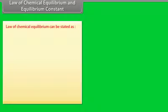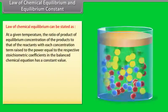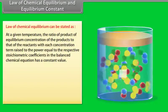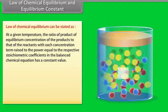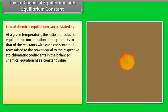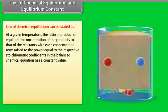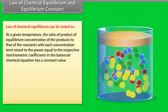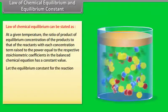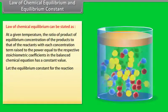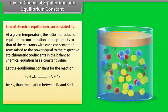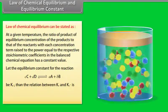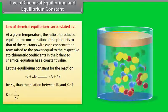The Law of Chemical Equilibrium states: at a given temperature, the ratio of the product of equilibrium concentrations of products to that of reactants, with each concentration term raised to the power equal to the respective stoichiometric coefficients in the balanced equation, has a constant value. For the reverse reaction with equilibrium constant KC′, the relation is: KC′ = 1/KC.